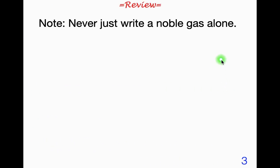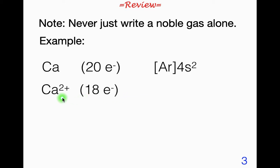Note: never just write a noble gas alone. I kind of mentioned this last time. For example, calcium, this would be the electron configuration for calcium. When calcium has a positive 2 charge, you might be tempted to just write argon. You're getting rid of those two electrons. But we don't do that.